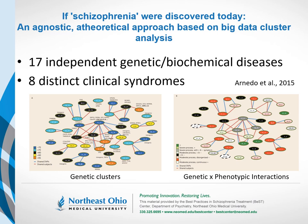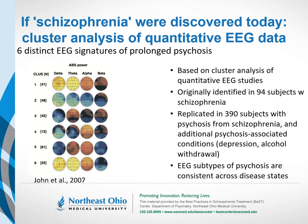A different modern approach to the categorization of schizophrenia-like illness would be to simply use electroencephalography and quantify the waveforms. John and colleagues discerned six different electrophysiological signatures within groups of people with schizophrenia. Interestingly, these six electrophysiological subtypes also existed in other forms of illness characterized by psychotic states, such as psychotic depression or alcohol withdrawal psychosis — suggesting that what we call schizophrenia is not the same disease for everybody.